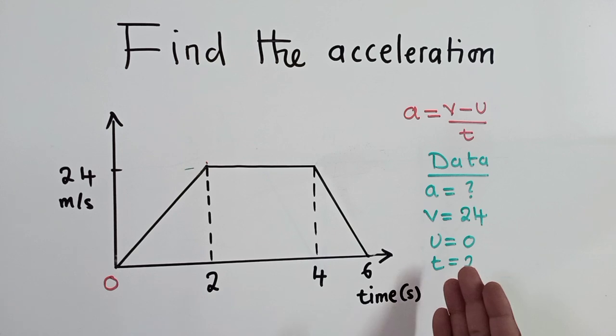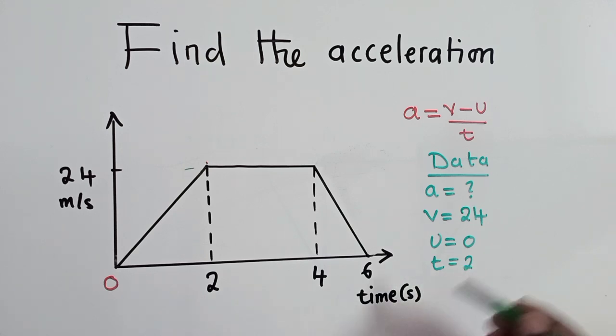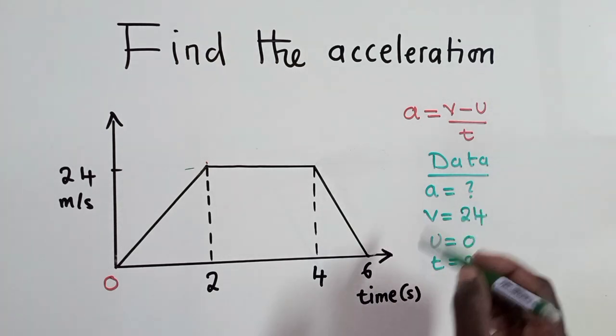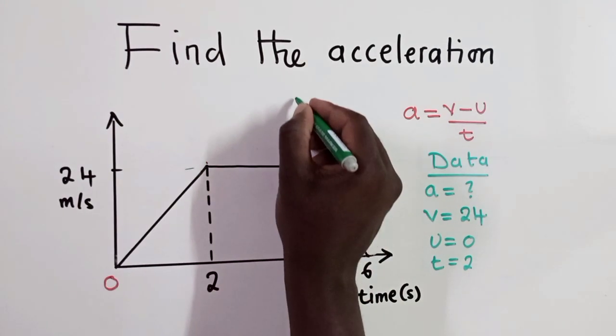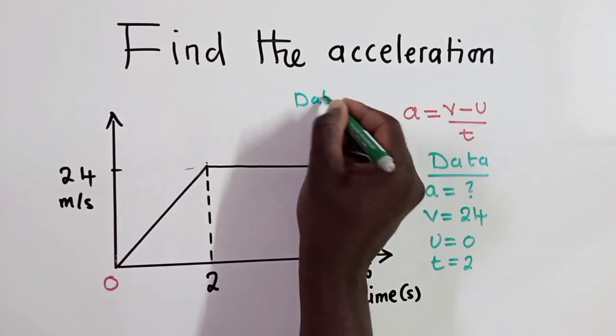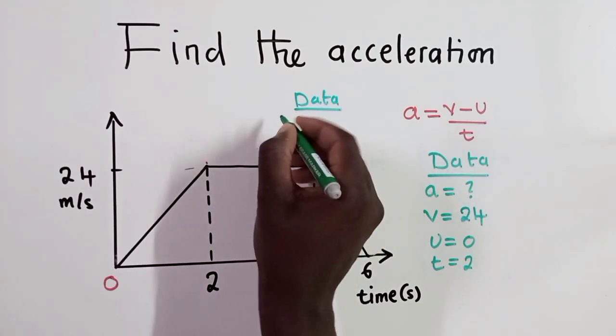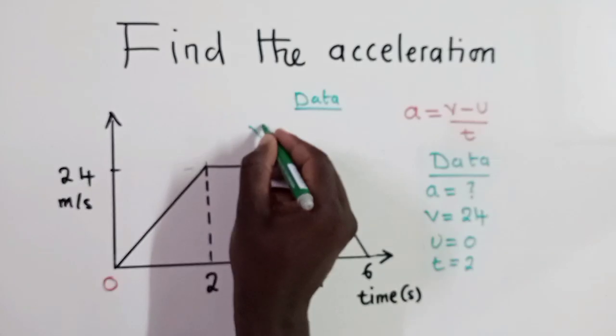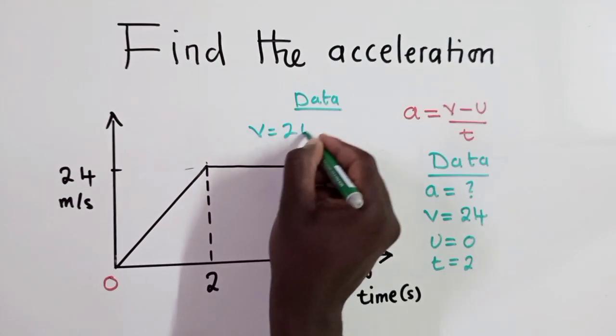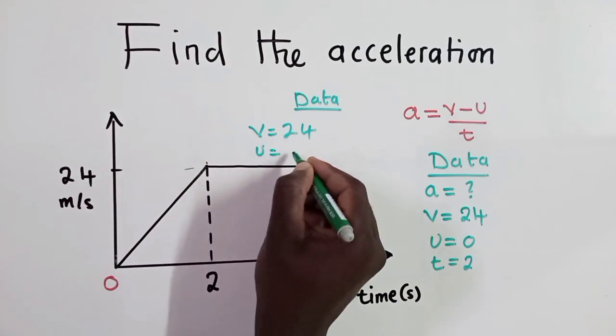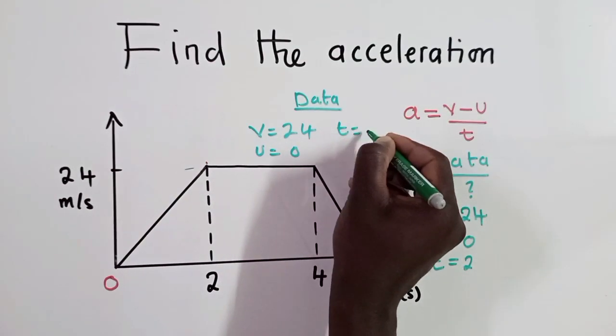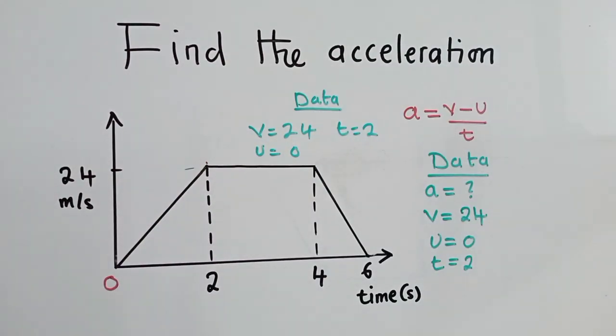So this is our data. And this is the data that we need to use in order for us to find the acceleration. So let me put it here. So I'm going to say data. My V is a 24. My U is a 0. And T is a 2. So this is what we need so far to answer the question.